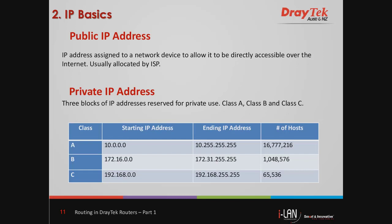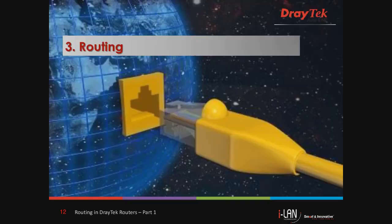It's important to note that there are two types of IP addresses: public IP addresses, which are visible on the Internet, and private IP addresses, which are reserved for private use. A router connected to the Internet will have a public IP address assigned to the WAN interface facing the Internet, and also a private IP address range for the LAN side of the router. The NAT function in the router will translate the private IP addresses to the public IP address. Here we have the IP address range for each block of IP addresses reserved for private use.